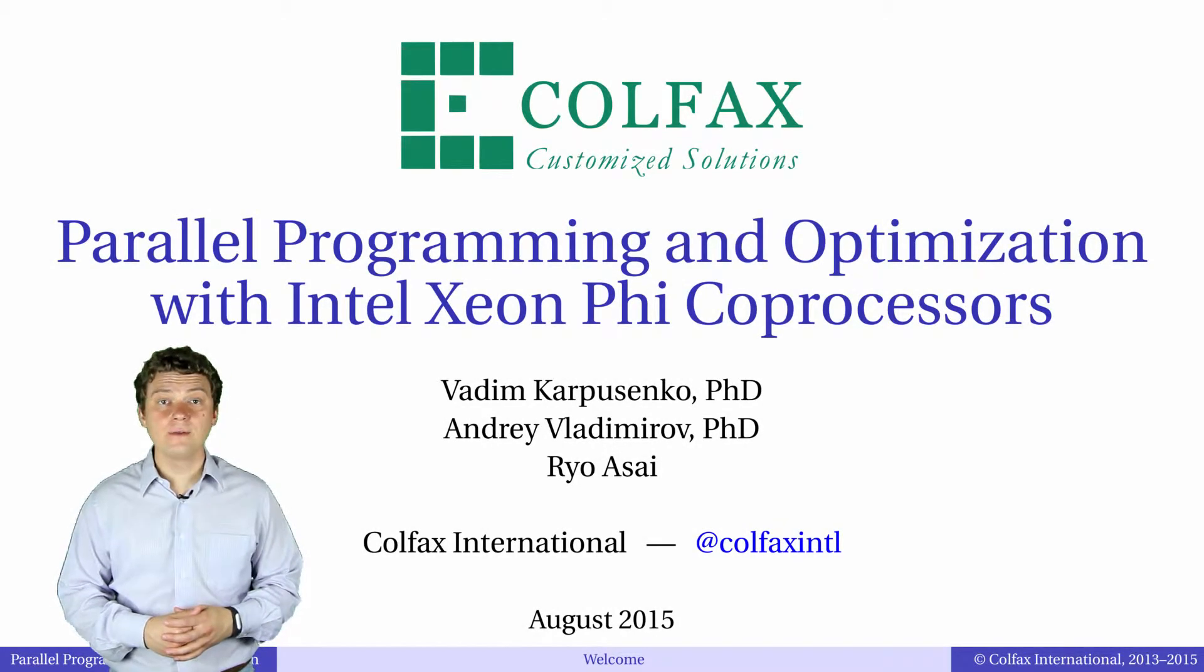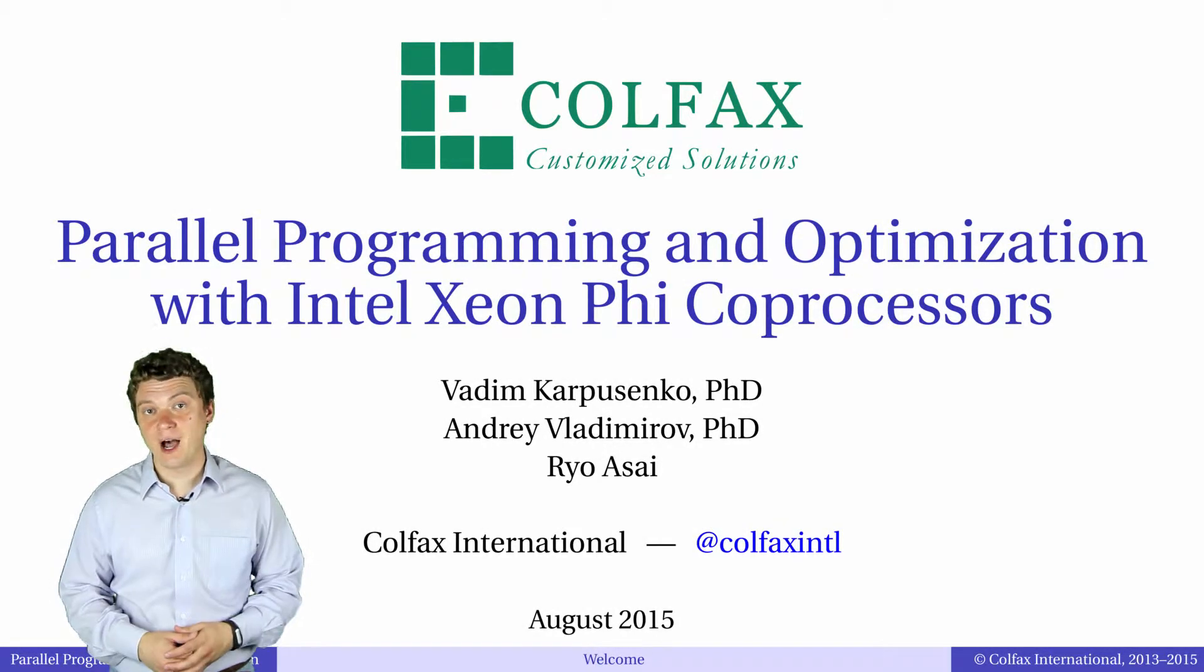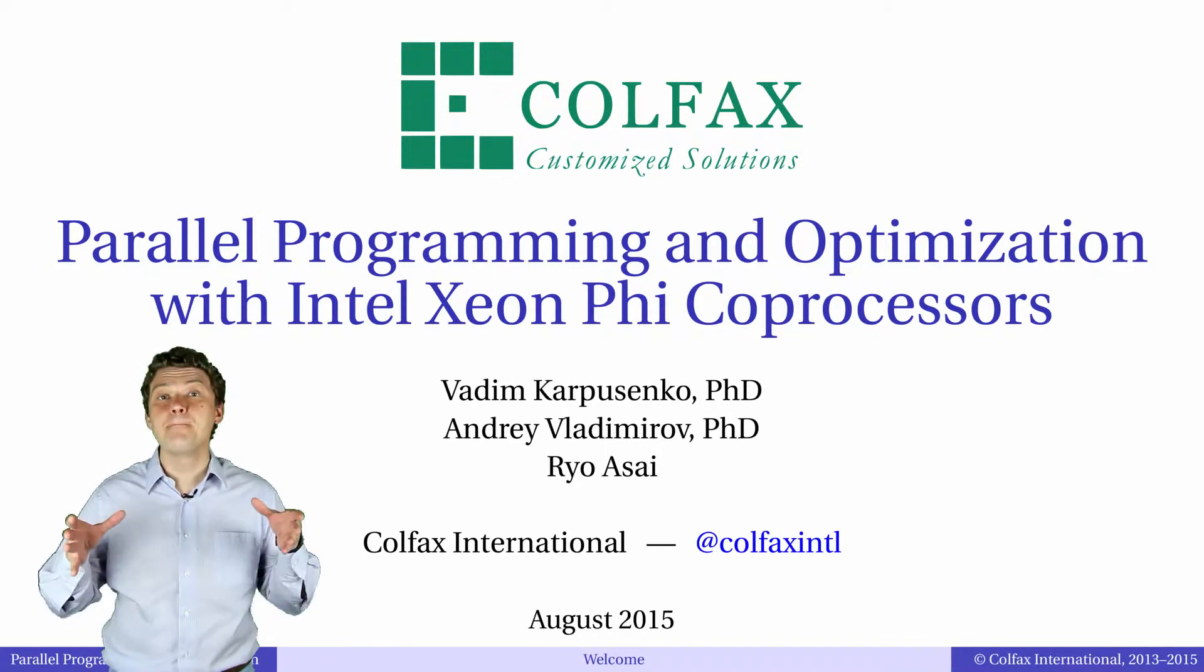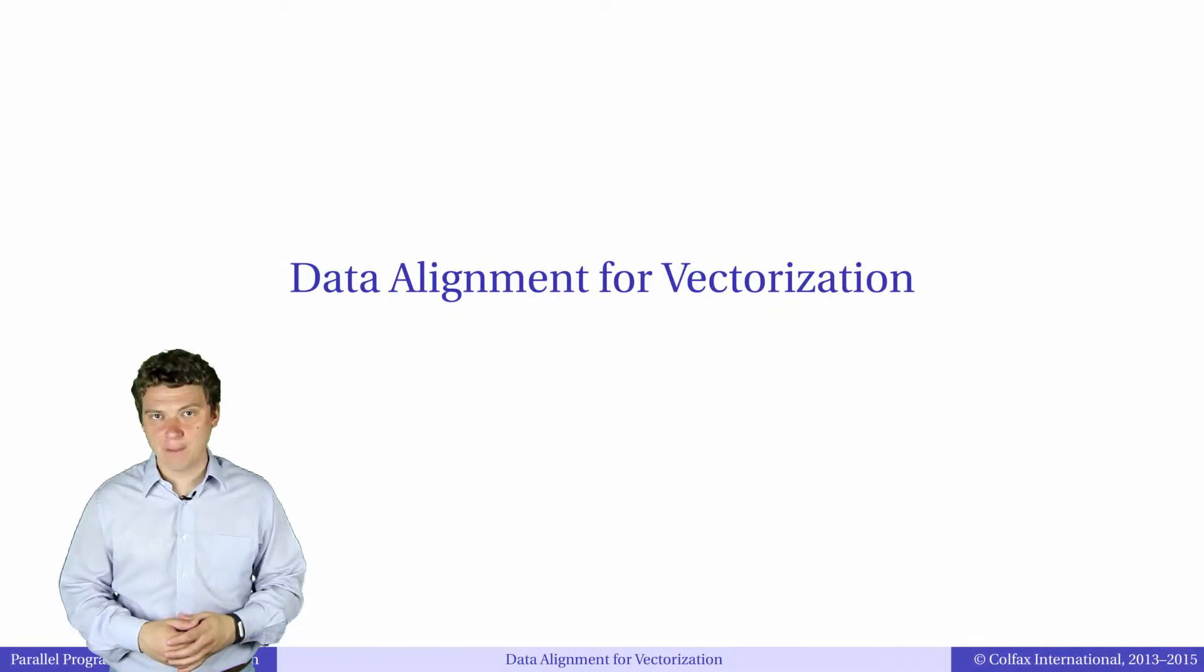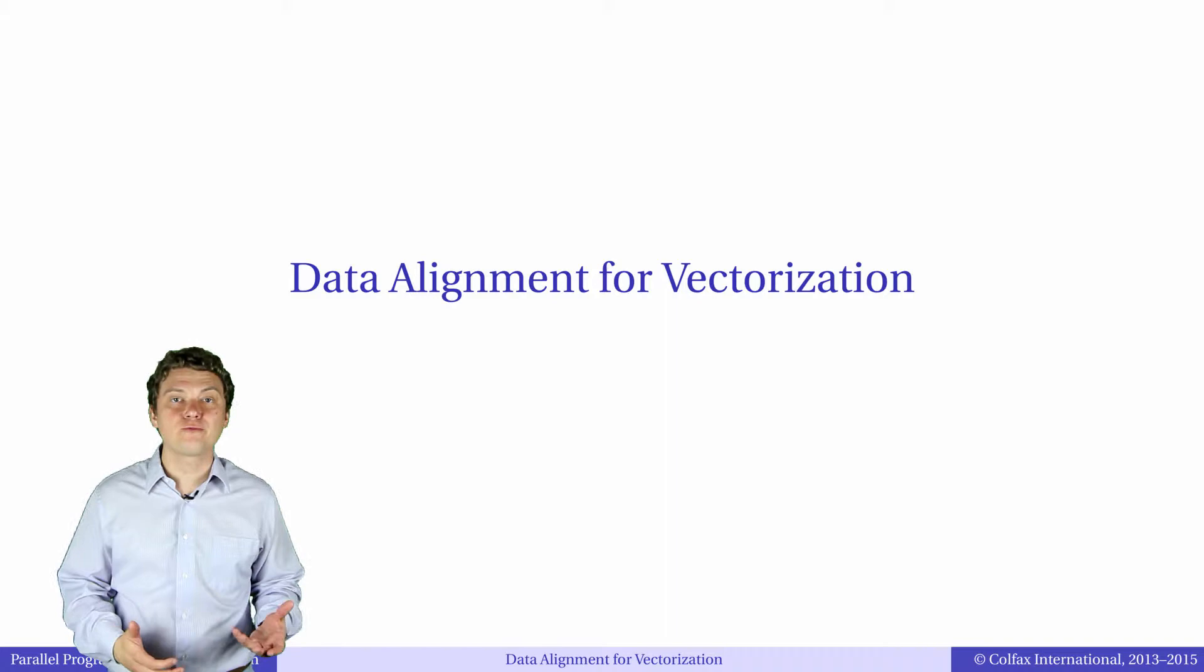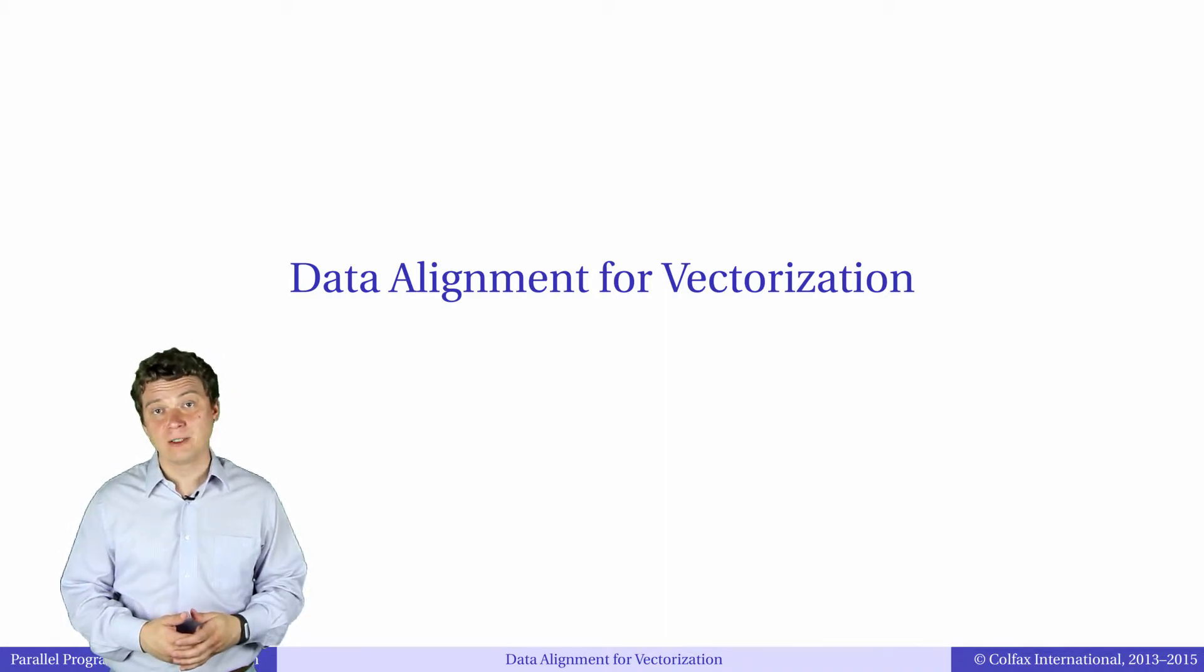In the previous episode, we talked about data alignment and how you can improve performance of vector calculations by aligning and padding your arrays. In this episode, we will look at practical examples of those procedures in the context of programming techniques for regularizing the vectorization pattern.